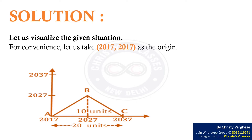Solution: Let us visualize the given situation. For convenience, let us take the ordered pair (2017, 2017) as the origin. Let this point be named as A. Let us call the pair (2027, 2027) as point B and the pair (2037, 2017) as point C.